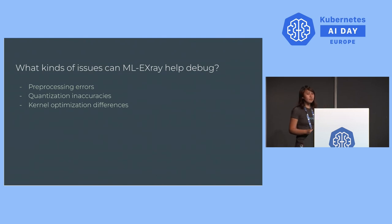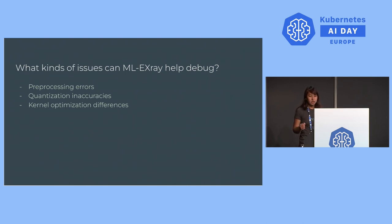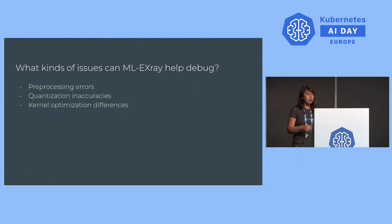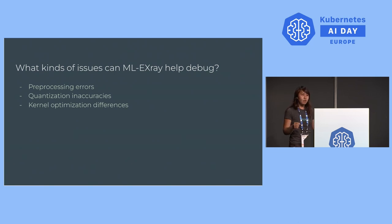What kinds of issues can this pipeline actually help you debug? There are three main categories: preprocessing errors, quantization inaccuracies, and kernel optimization differences amongst heterogeneous environments — the case where you have a bunch of different hardware and completely different environments that your models are running on.